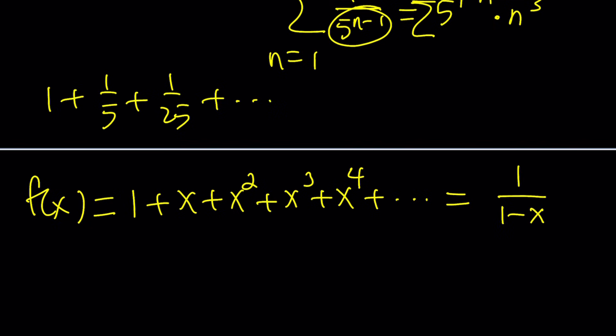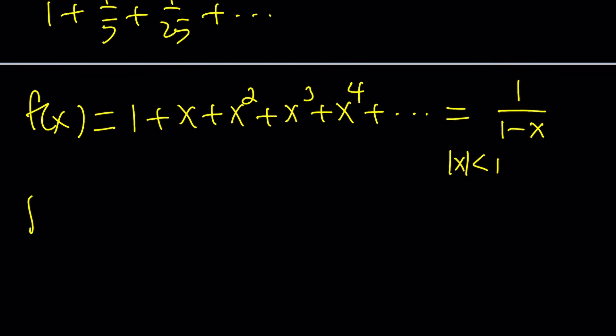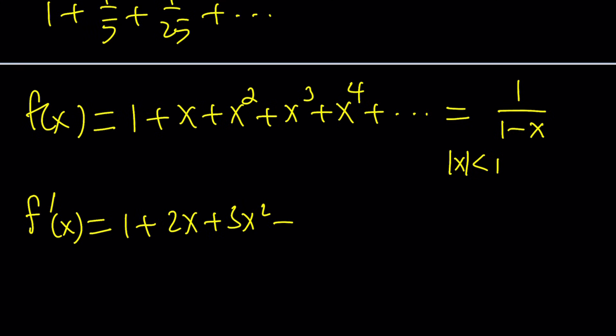It converges when the absolute value of x is less than 1, i.e., x is between negative 1 and 1. We're going to focus on f of x and use a little bit of calculus. We're going to differentiate f, which gives us 1 plus 2x plus 3x squared plus 4x cubed, and so on, and on the right-hand side you get the corresponding expression.